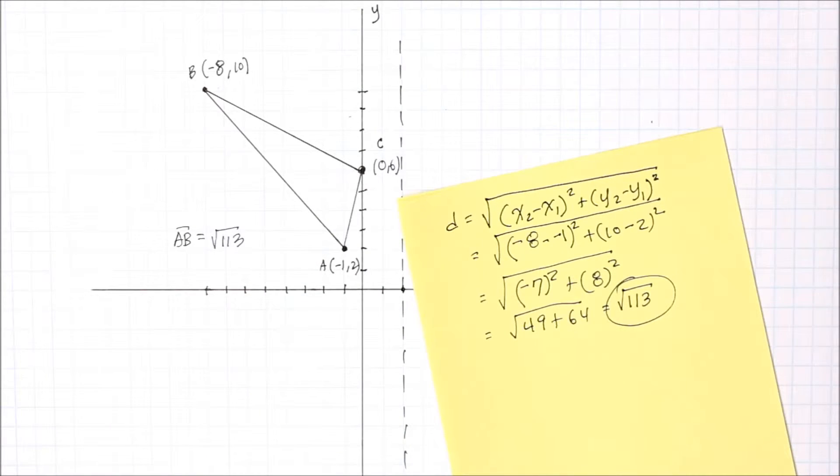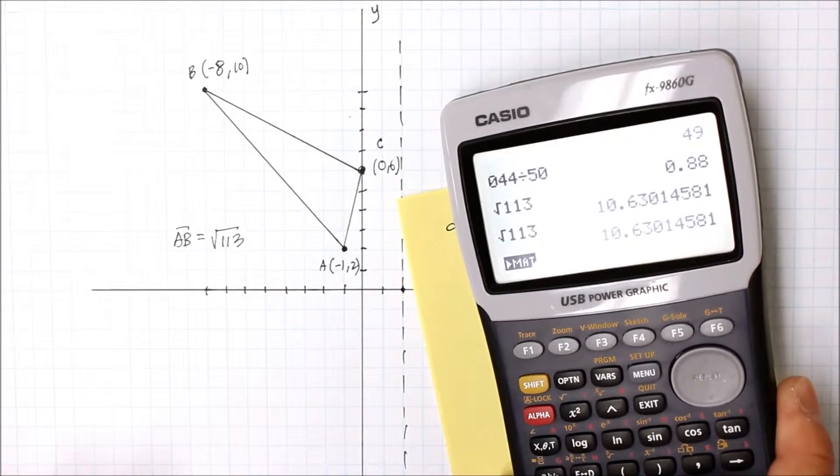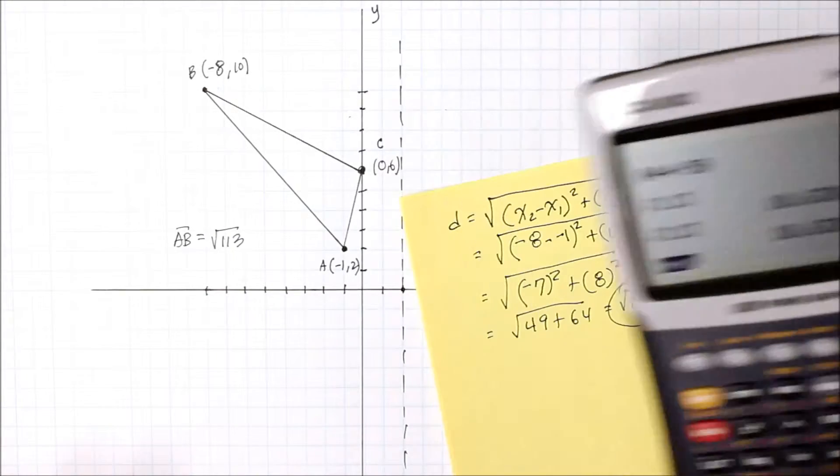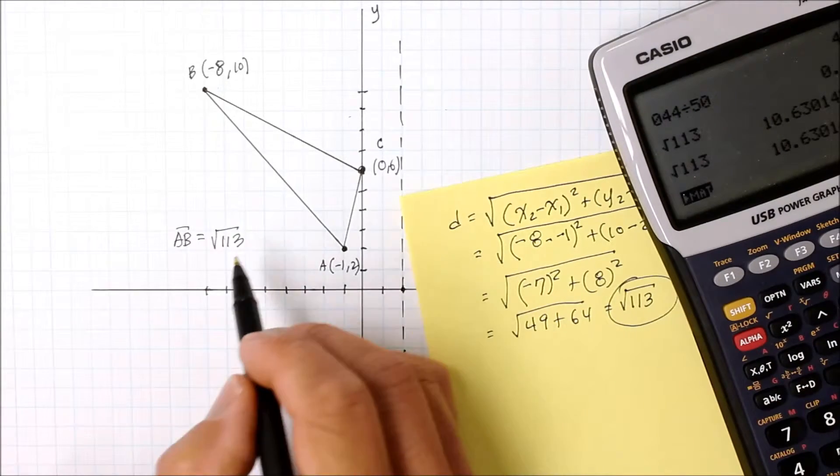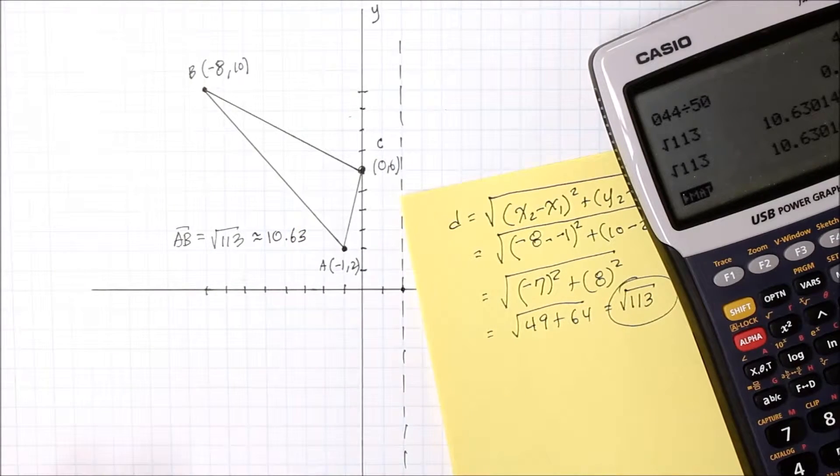If you're curious to see what the real number value of square root of 113 is, it shows here 10.63, which is about 10.63 units away. Very good.